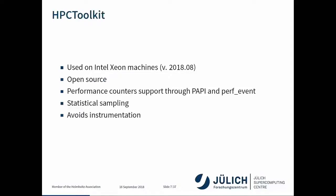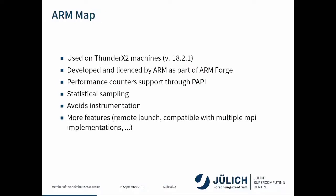A couple of words on the software libraries used. First, the performance measurement tools. On the Xeon platform, I have been using HPCToolkit, the latest version straight from Git. It's an open source statistical sampling application — it can measure performance counters and it avoids instrumentation. On the ARM side, I have been using ARM Map, which is part of ARM Forge. It also does statistical sampling and avoids instrumentation, and it has a couple more features.